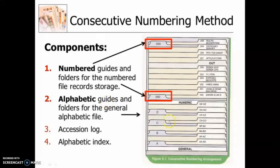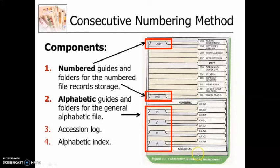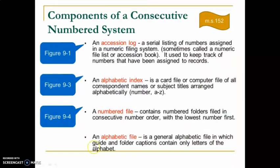Even though we are using the numbering method, there are still alphabetic guides in the drawer — dividers in alphabetic order A, B, C, D, and so on. Each drawer combines both a general alphabetic section and a numeric section. There will also be an accession log and alphabetic index, which we'll cover next.